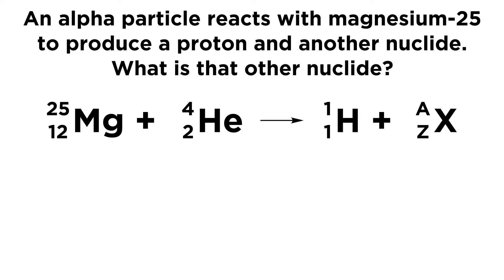So let's write out the reaction that is represented here. We know that we are dealing with magnesium-25, so we're going to start with Mg, and that has an atomic number of 12, as any magnesium atom will, and so we put a 12 down there, and then this particular nuclide has a mass number of 25. So we can put 25 on the top left.